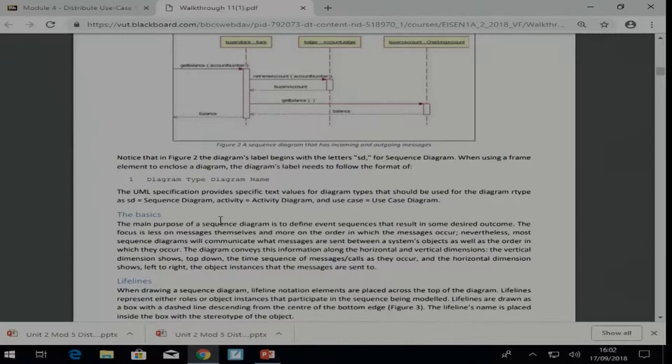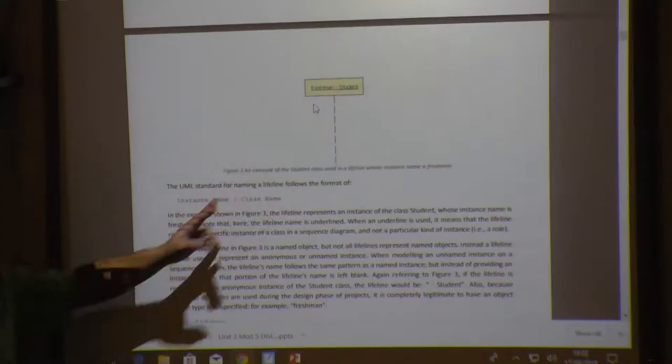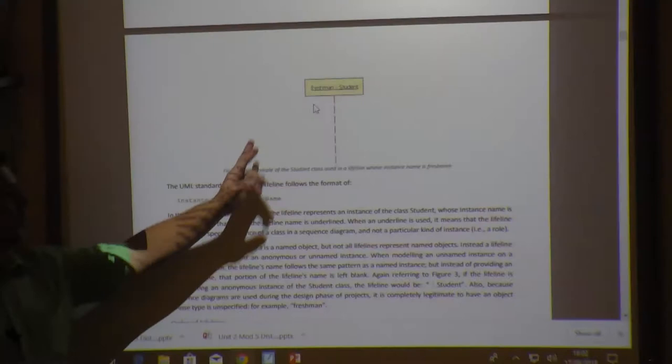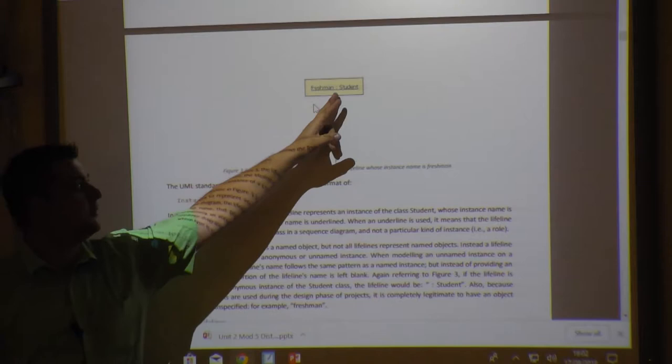From this we can see that a lifeline can be named in such an extent that we have our object to the left of the colon, we see the object name, and then the actual class name from which this object is derived.